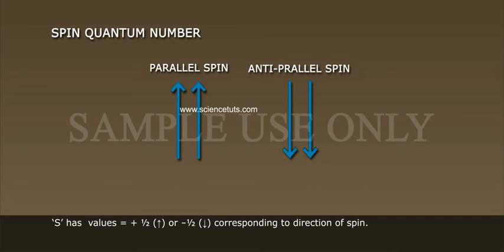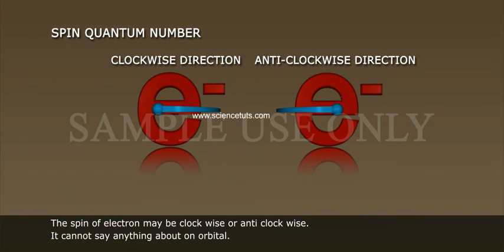S has values equal to plus half up arrow or minus half down arrow corresponding to direction of spin. The spin of electron may be clockwise or anticlockwise. It cannot say anything about an orbital.